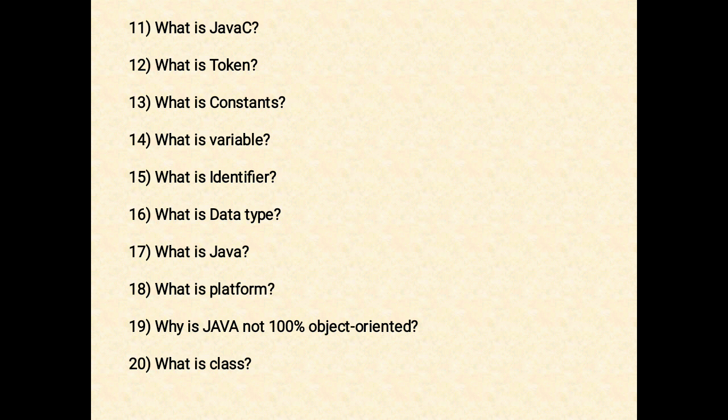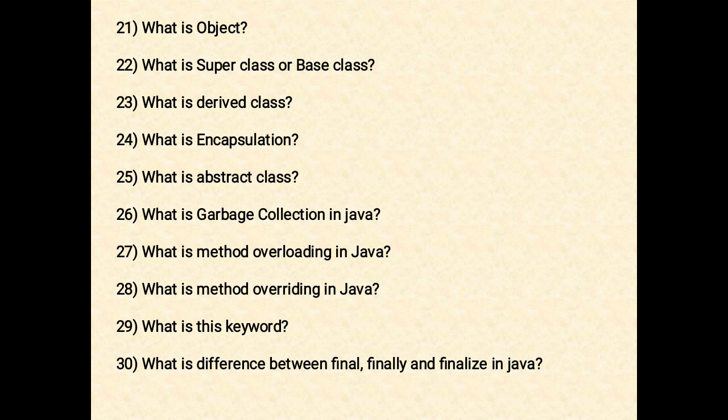The next question: what is a class? A class is a blueprint from which objects are created. A class contains data members to store information and member functions to operate upon data members. The next question: what is an object? An object is an instance of a class. It is basically a real-world implementation of the class having all the property values which are defined in the class.